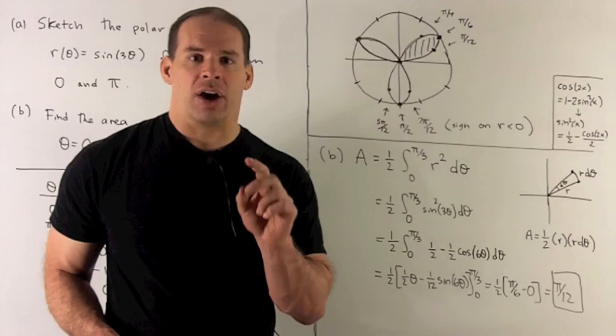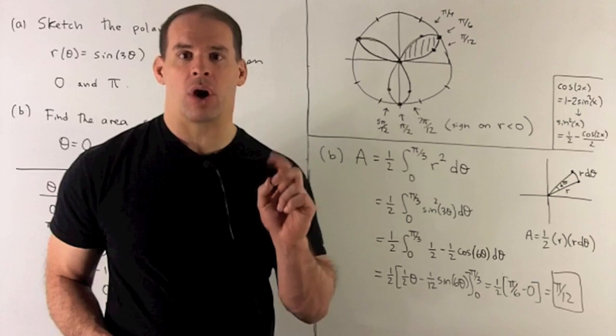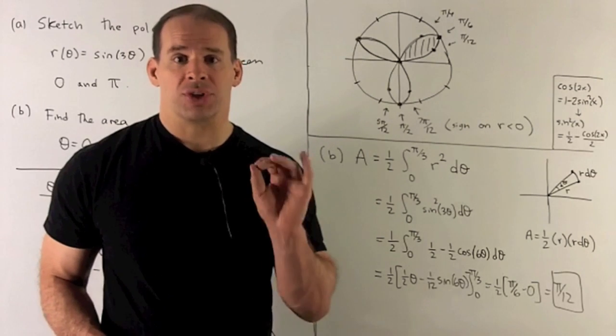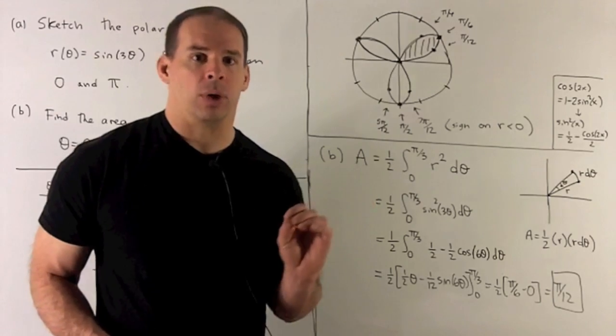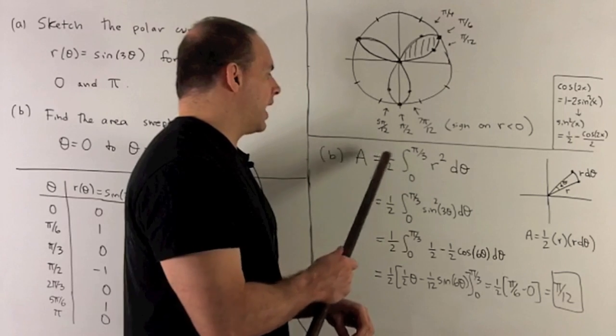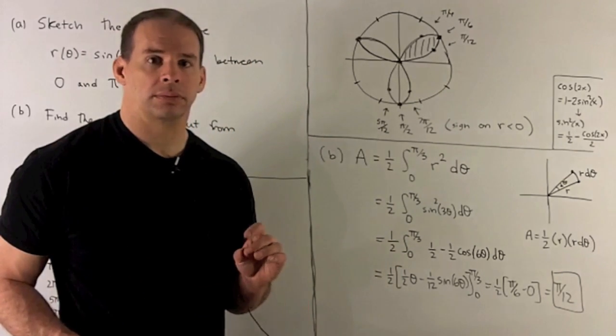We're going to take the area of that triangle. That's 1/2 r times r dθ, which is 1/2 r² dθ. Put that through our limit process, that's going to turn into our area formula. Take your integral between your angles, 1/2 r² dθ.